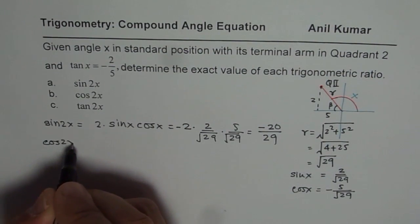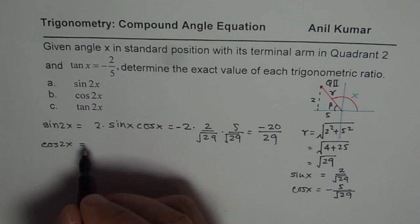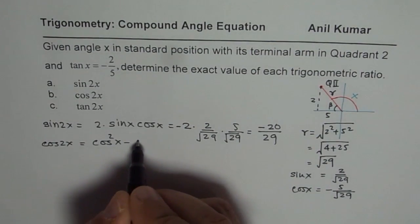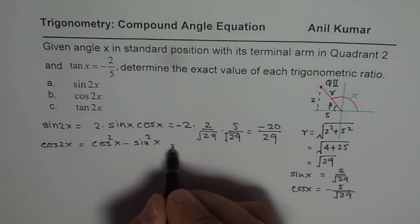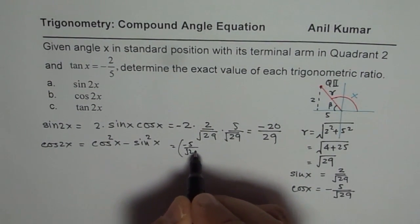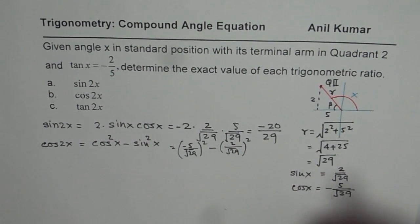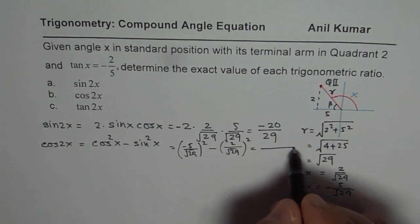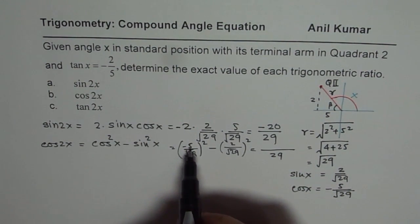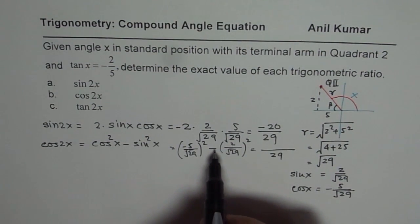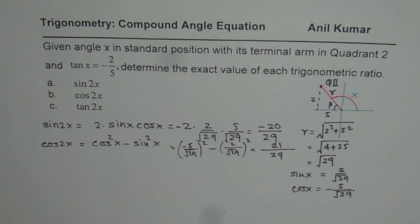You can calculate cos 2x also. So cos 2x, we have 3 different formulas for cosine. You could use any one of them. Let us use cos squared x minus sin squared x formula. Substitute these values. So which in this case will be minus 5 over square root of 29 whole squared minus 2 over square root of 29 whole squared. That gives you, when you square it, denominator is 29. And the numerator will be 5 squared is 25, 25 minus 4, so 25 minus 4 will give you 21. So that would be the value of cos of 2x.